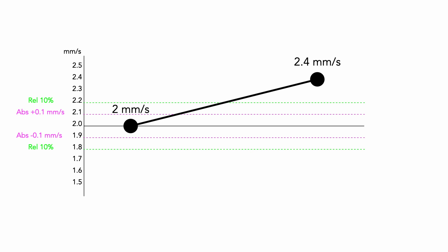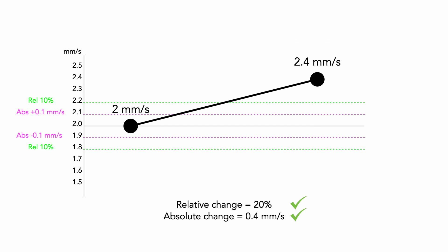Relative change is the percentage difference between the last saved value and the new measured one. In this case the relative change is 20%, which is higher than our set value of 10% — so the condition of relative change is met. Absolute change is the difference between the last saved value and the new measured one: 0.4 mm/s, which is higher than our set value of 0.1 mm/s — condition of absolute change is met also. It means that a significant change occurred, and that's why the new measured value will be saved.